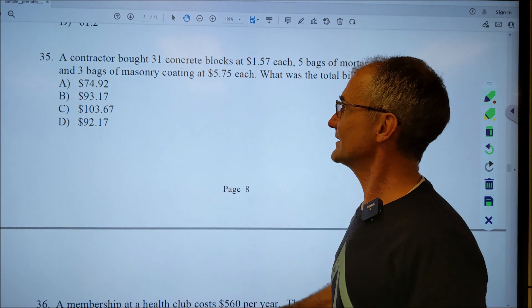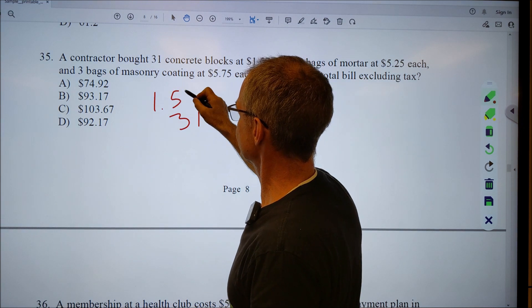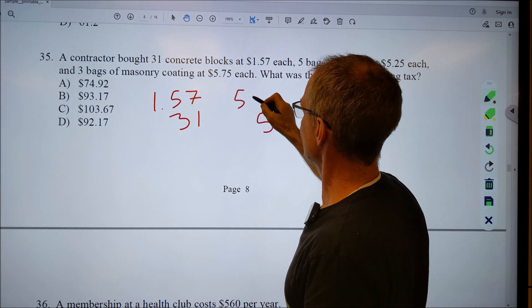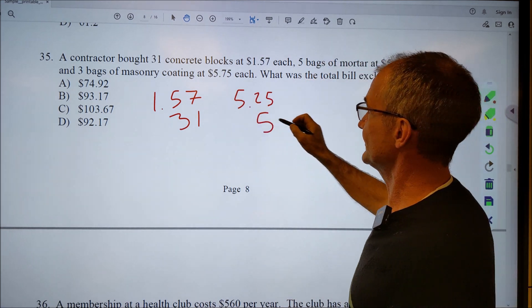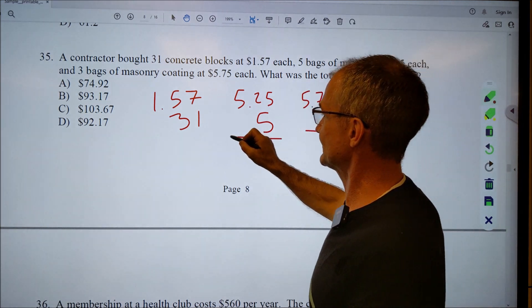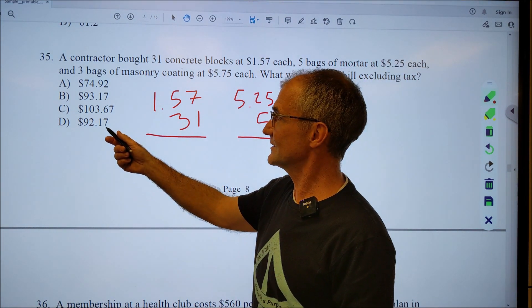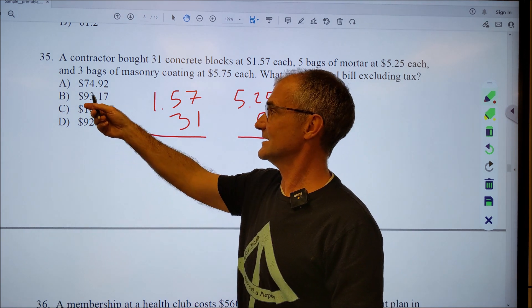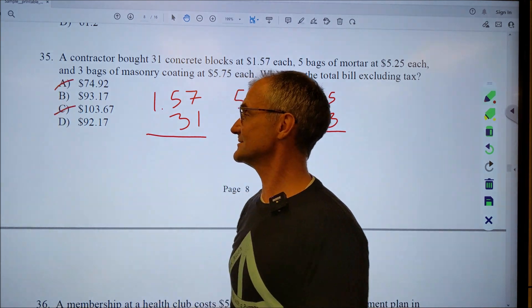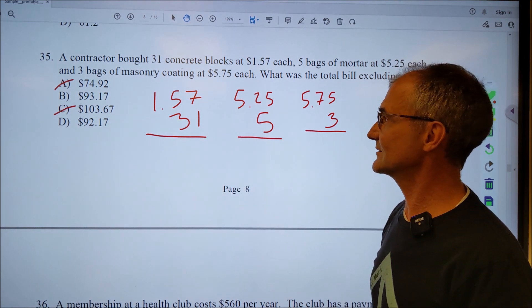Okay, number thirty-five. Contractor bought thirty-one bags of blocks at a dollar fifty-seven, five bags of mortar at five twenty-five, and three bags at five seventy-five. So before I even do all of this and multiply these and then add them all together, I'm just going to look at my answers and see if there are any ones that are kind of... I can tell B and D are almost the same. So I know it's going to be pretty close to ninety. So I know it can't be those two. If I'm out of time, I would just guess between B or D. Or I could just multiply through it and see if I could solve this.